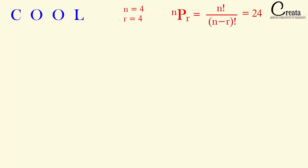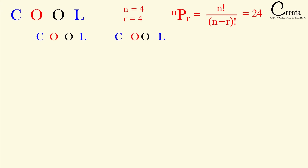Here we are having the word C-O-O-L. In COOL, the letter O is repeating 2 times. For further understanding the concept, let's give a different color to each O — red and black. If we write the word COOL and exchange the place of the two O's, it will again be COOL. So if we replace one O with the other O, no new word is formed — the word remains the same. Similarly, if we form the word OOCL and exchange the O's again, we again get OOCL — no new word is formed.